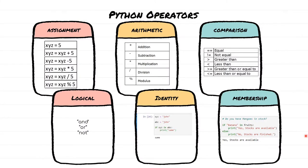In this session we are going to be talking about Python operators. Python operators are really the backbone of Python programming — they operate on either variables or values. Here you can see we have different types of operators available in Python: assignment, arithmetic, comparison, logical, identity, and membership operators. Let's go through all of these one by one.